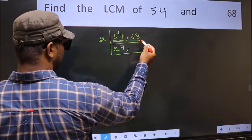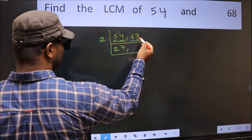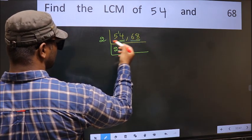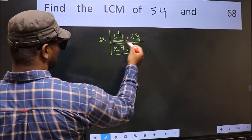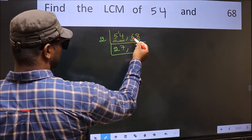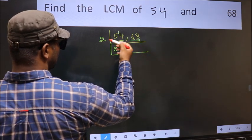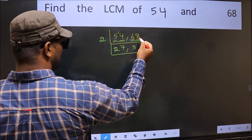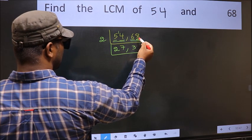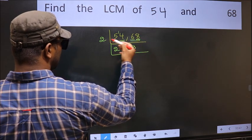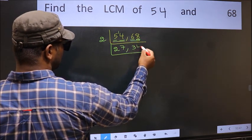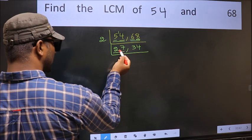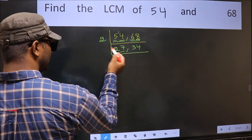The other number is 68. The last digit is 8, so this is divisible by 2. The first digit is 6 — when do we get 6 in the 2 times table? 2×3 is 6. The other digit is 8 — when do we get 8 in the 2 times table? 2×4 is 8. Now here we have 27 and 34.